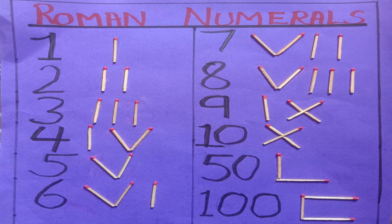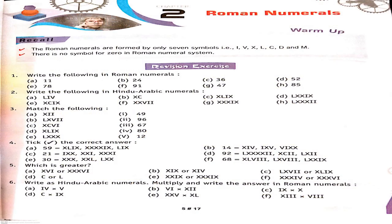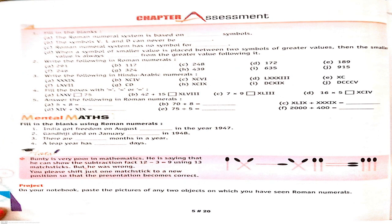Now children, your exercise is over. Your homework is that you have to write it in your notebook. Similarly, you have to solve the other parts of this question — question number 5: write the following Roman numerals in ascending order. Also do the revision exercise and chapter assessment by yourself in your notebook. Thank you students.